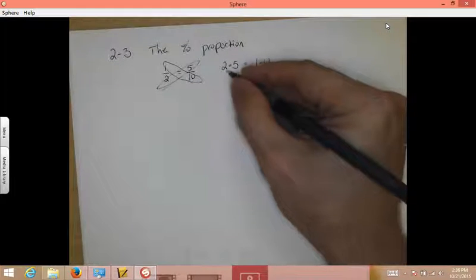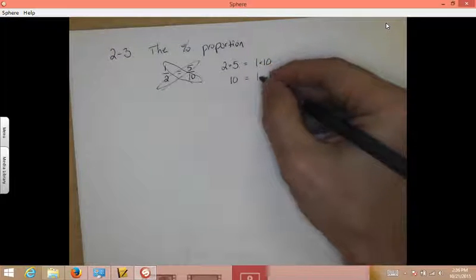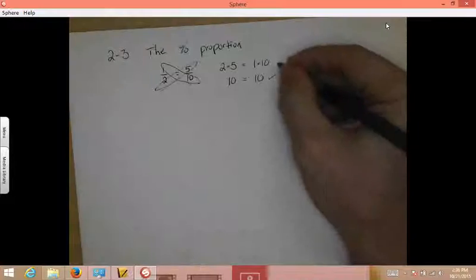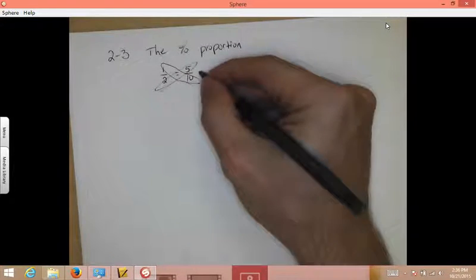And we check it with multiplication. 2 times 5 is 10. 1 times 10 is 10. This is true, so this is true, which means one half equals 5 tenths.